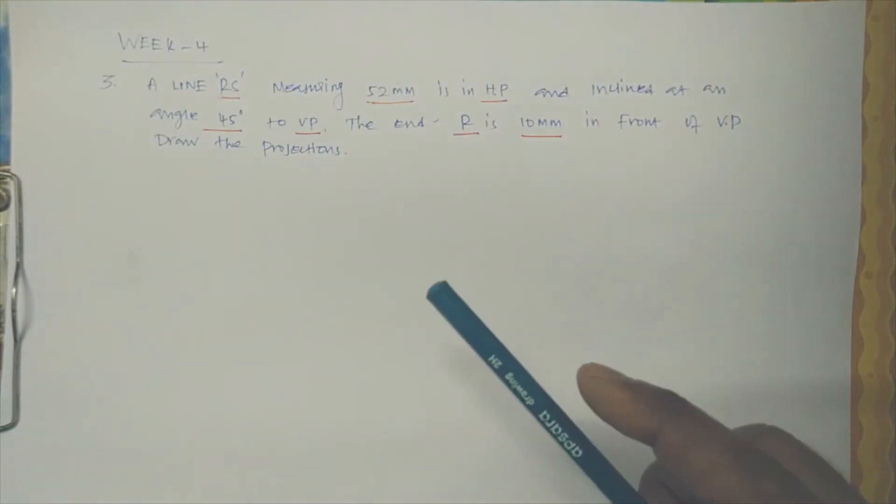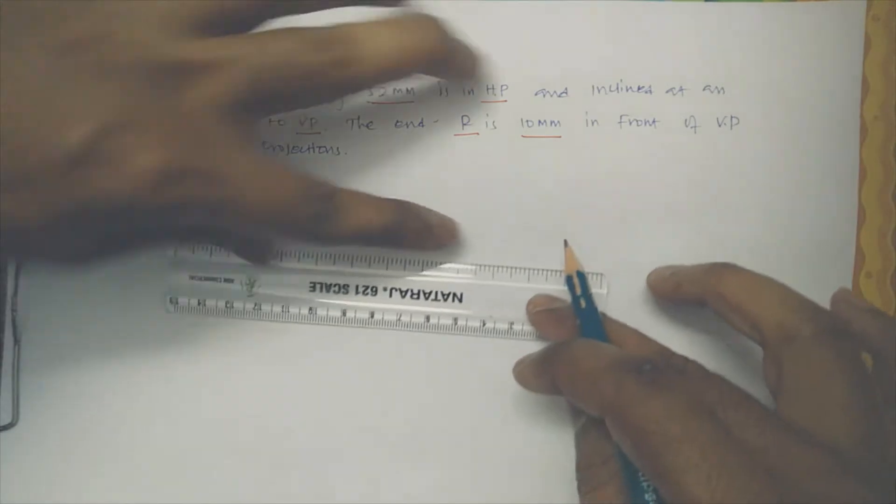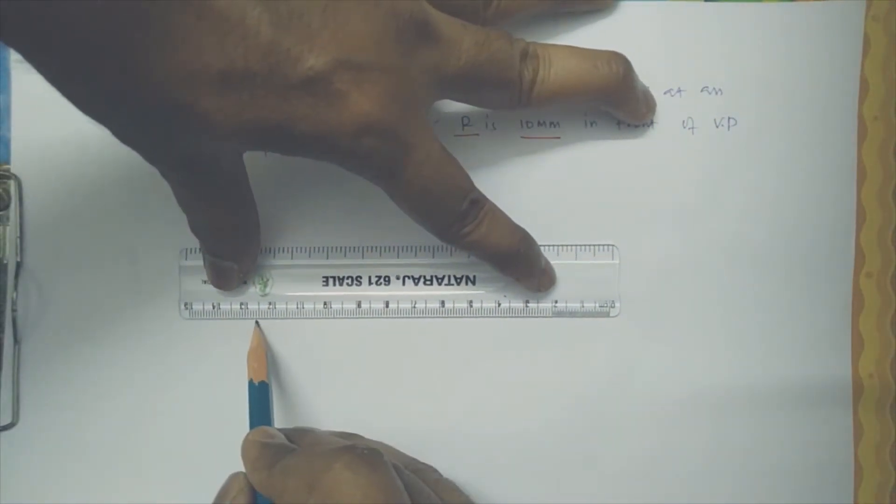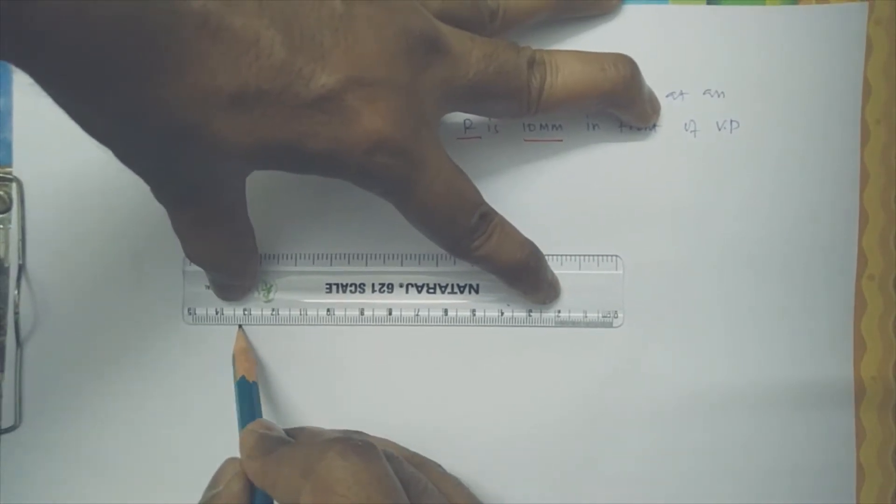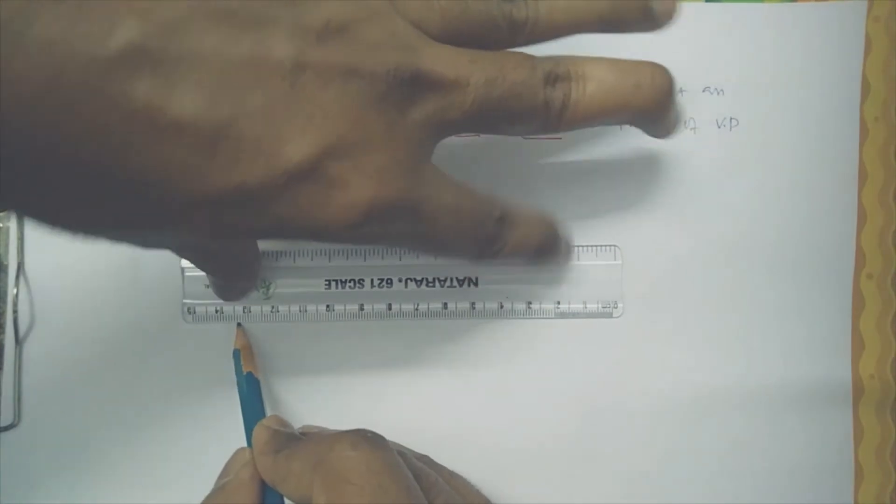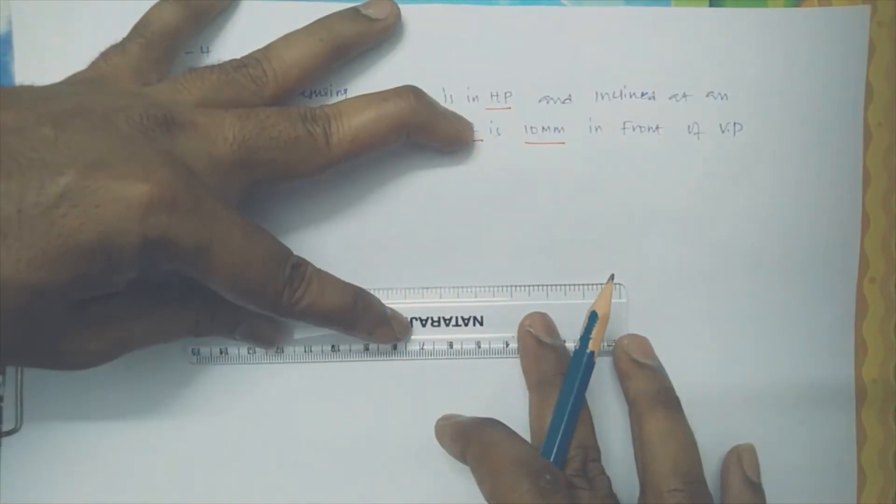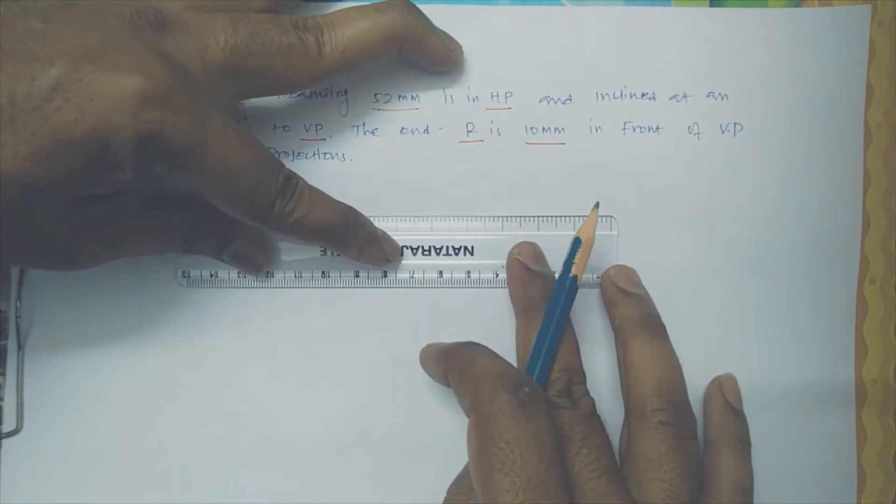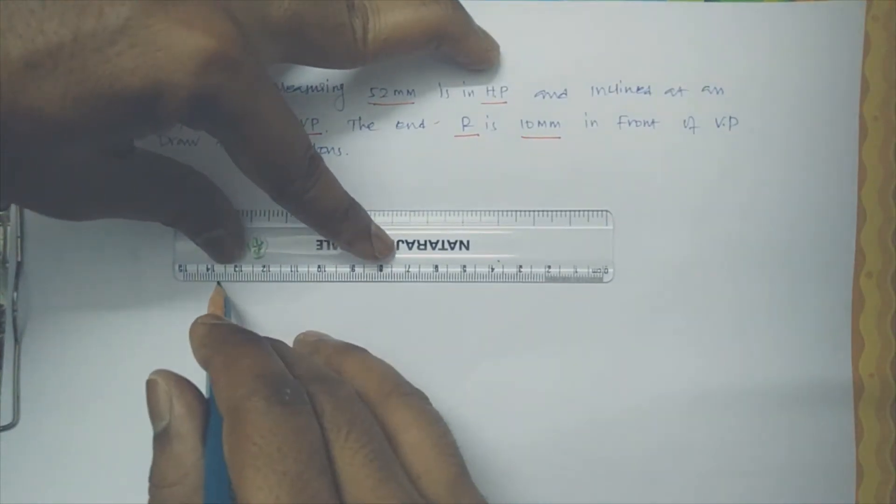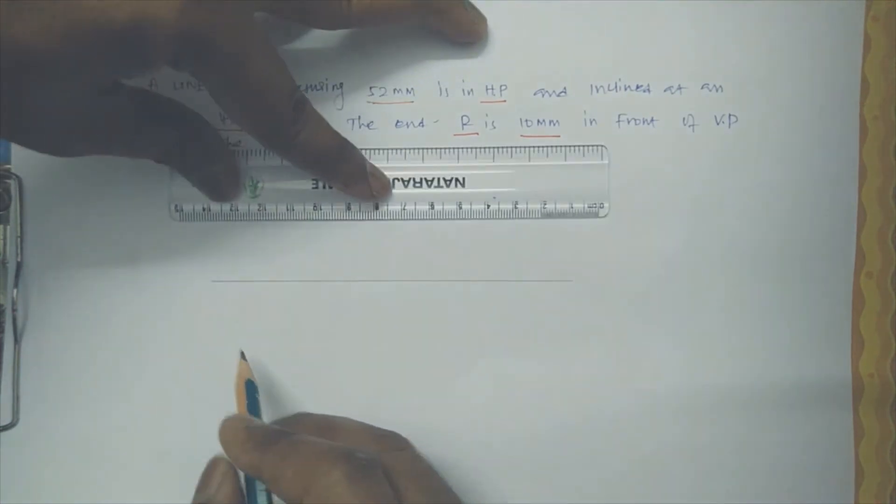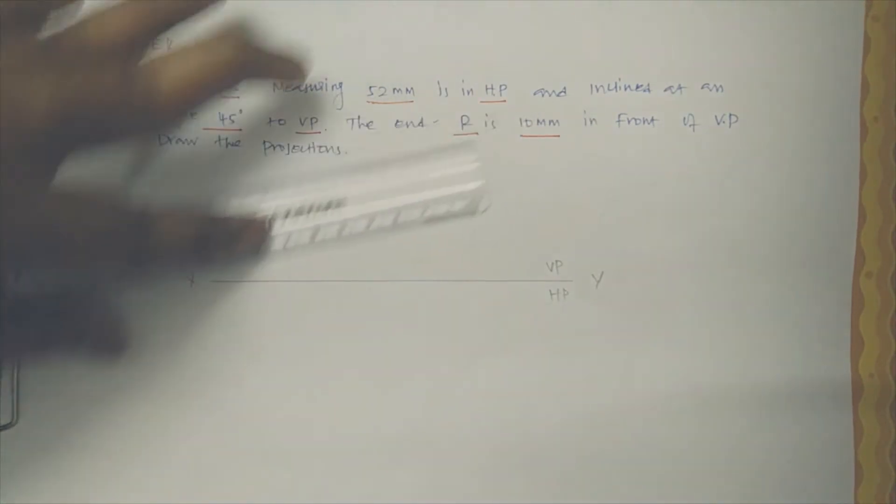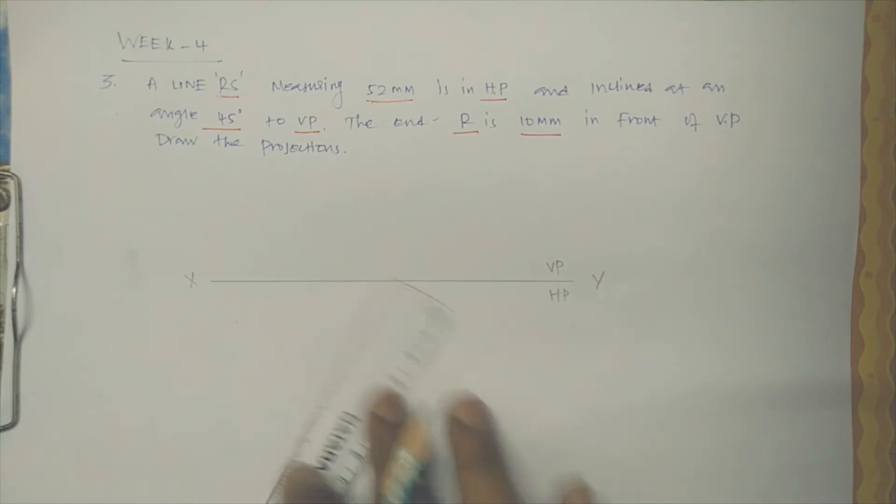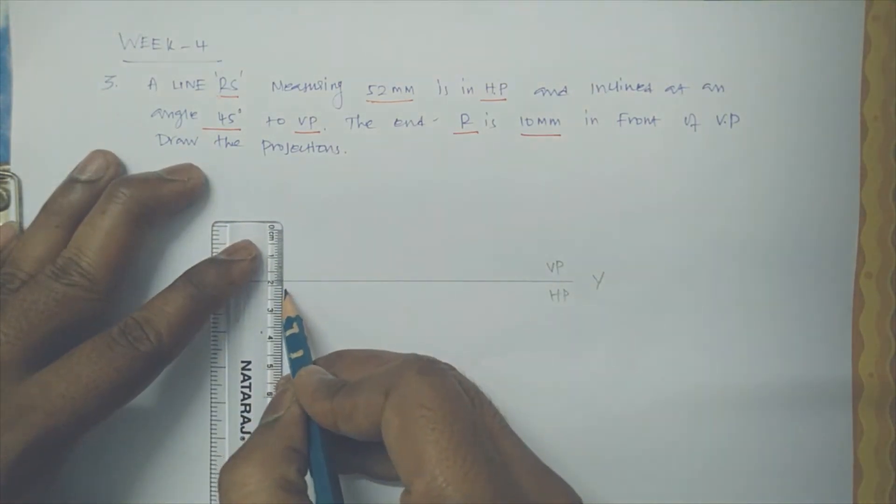So let us draw the reference line first. Usually the reference line is supposed to be named X and Y. Let me draw here so that will be reasonable. Just specifying X and Y, this is VP and HP.